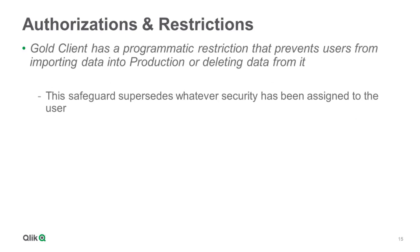Goal Client has a programmatic safeguard that prevents users from executing imports of data into a customer's production system and from executing data deletions from it as well. It is possible to use Goal Client to delete data, but more on that in a later video. Be aware that this safeguard supersedes the user's security and is therefore independent of whatever Goal Client authorizations may have been assigned to them.